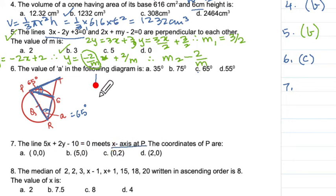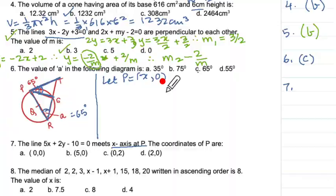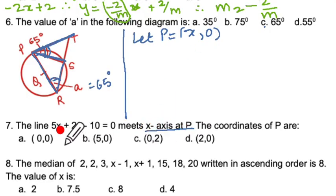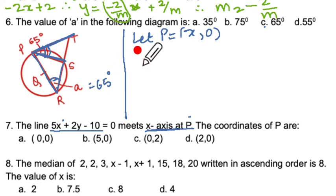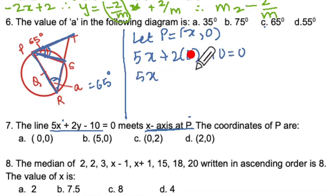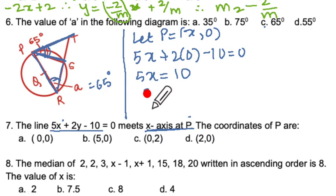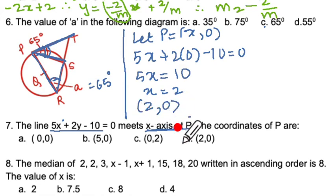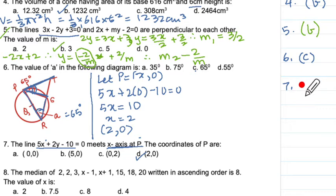Part G: the line meets the x-axis at point P. Let P = (x, 0). Substituting into the line equation 5x + 2y - 10 = 0: 5x + 2(0) - 10 = 0, so 5x = 10 and x = 2. Therefore P is (2, 0), which is answer D.